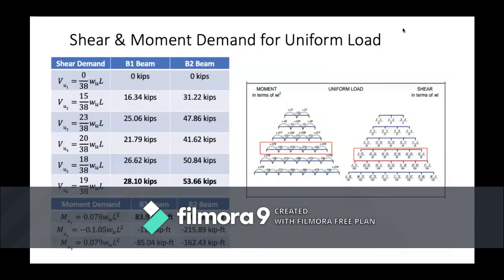Next we will find the shear and moment demand for a continuous beam with equal spans using the moment and shear coefficients in this diagram. The maximum shear demand for beam B1 is 28.10 kips and for B2 it is 53.66 kips. The maximum moment for B1 is 83.97 kip-feet and for B2 is 160.38 kip-feet.